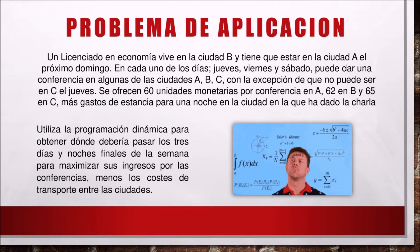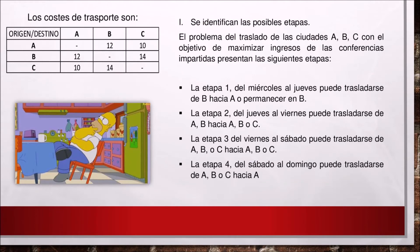Problema de aplicación. Un economista cobra por dar conferencias: 62 en B y 65 en C, más gastos de estancia para una noche en la ciudad en la que ha dado la charla. Se utiliza la programación dinámica para obtener dónde debería pasar los tres días y noches finales de la semana para maximizar sus ingresos por las conferencias menos los costes de transporte entre las ciudades. Los costes de transporte son entre origen A, B y C hacia destino A, B y C.